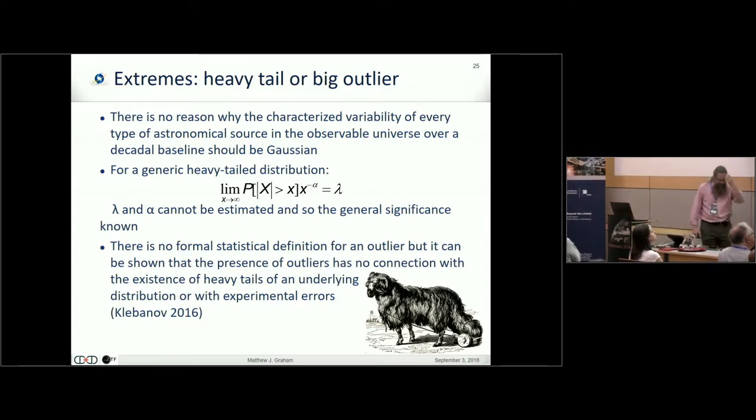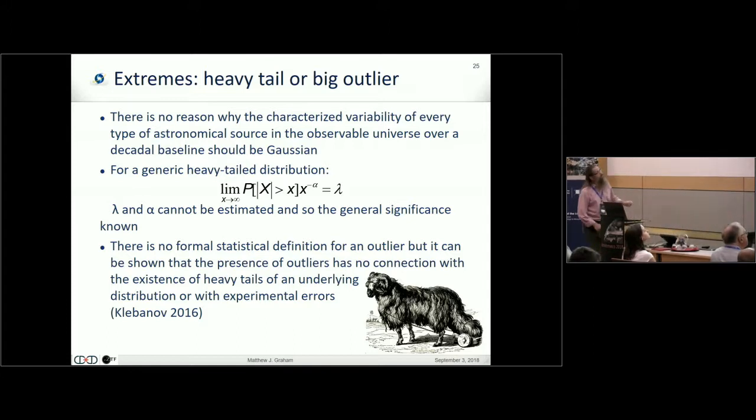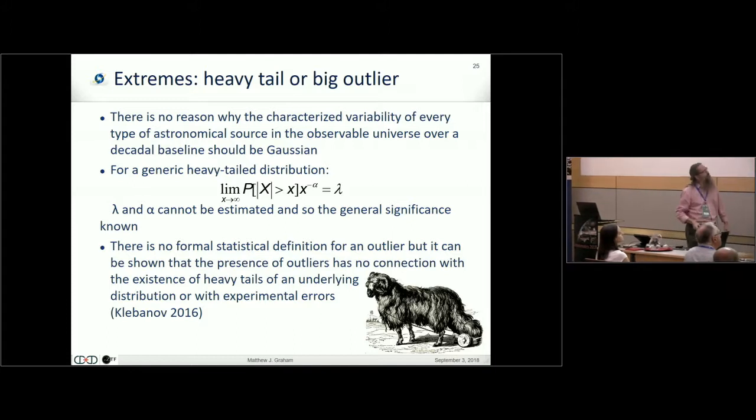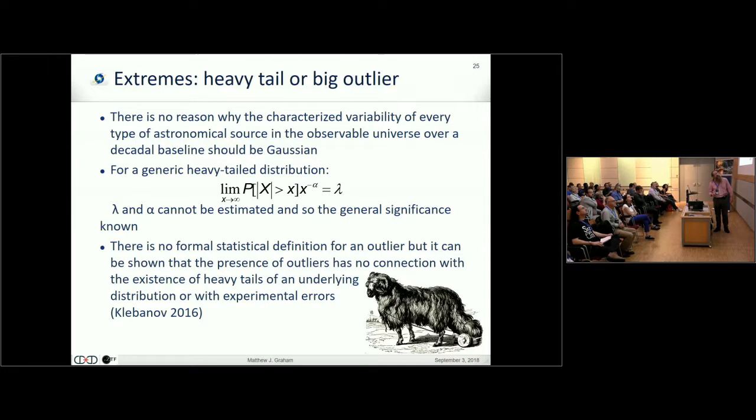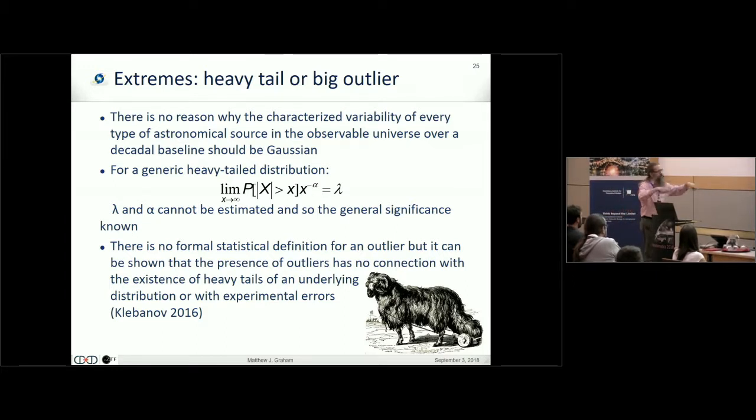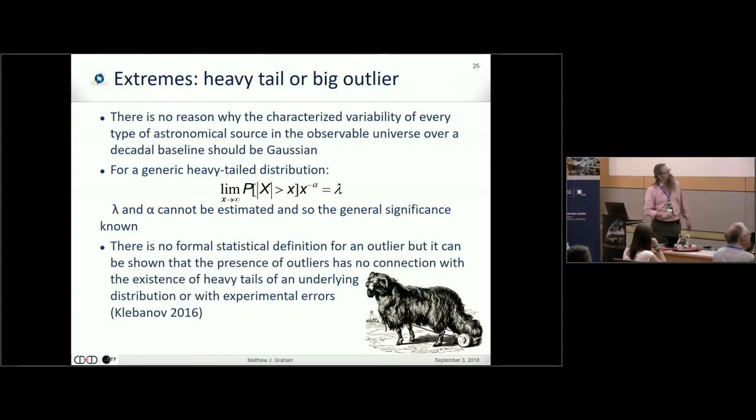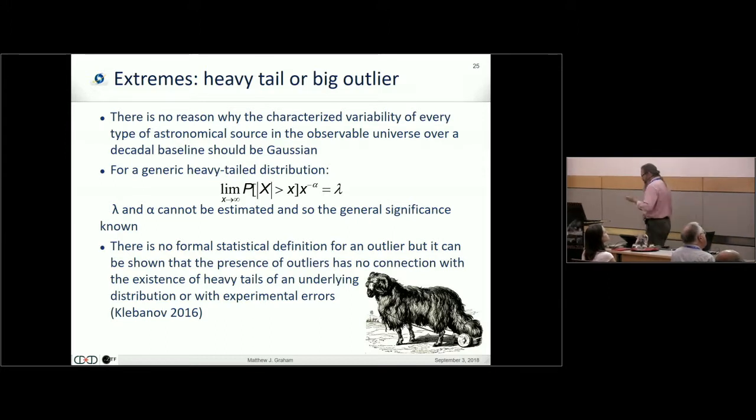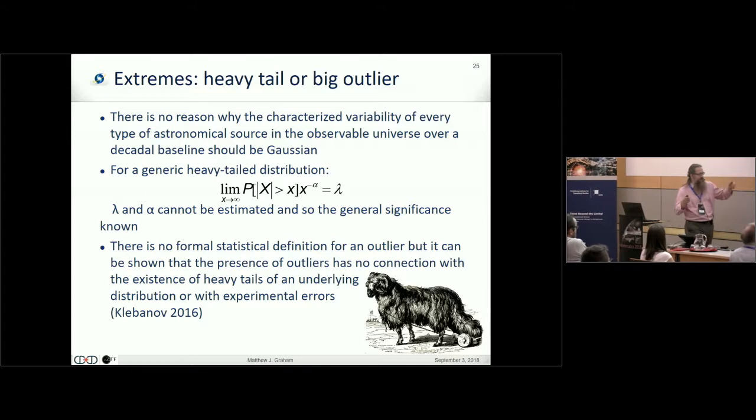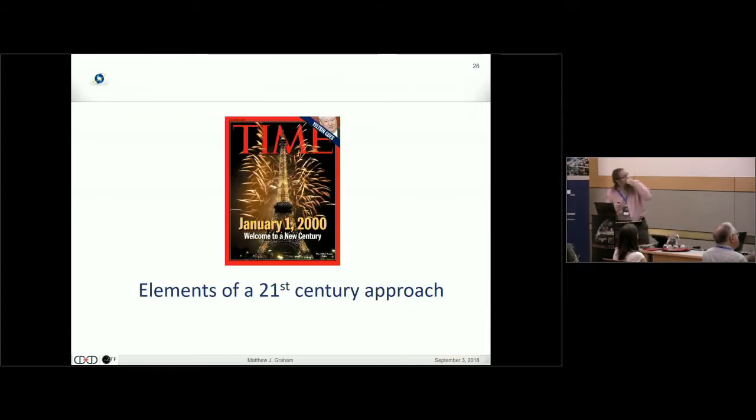Another problem we have is actually identifying these outliers or these extreme classes that we have. There's no reason—we always assume Gaussian tails, and there's no reason at all why they should be Gaussian. But the problem then comes that for a generic heavy-tailed distribution, you cannot actually say what the significance of something is. If you're going to assume a heavy-tailed model statistically, you then have to be very specific about what that heavy-tailed distribution is to infer whether something is significant or not. And actually, there's no formal statistical definition of what an outlier is. And you can have outliers without the presence of heavy tails or experimental errors. So we make these assumptions in time series analysis about what outliers are without necessarily having any really good idea of what outliers are.